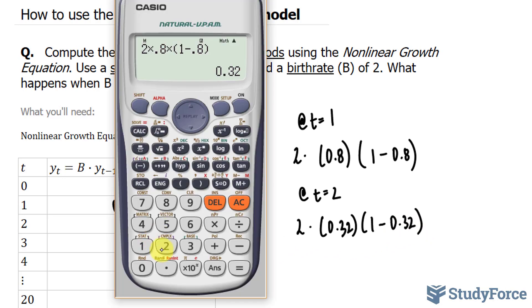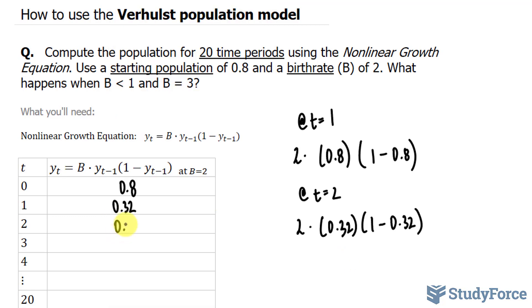Using our calculator once again, 2 times 0.32 times 1 minus 0.32, and that gives us 0.4352, or simply 0.43.